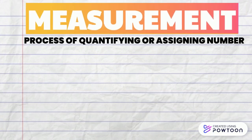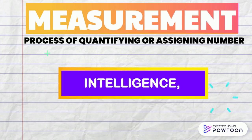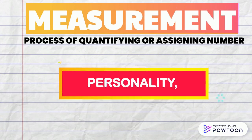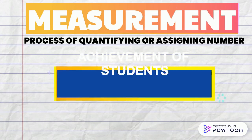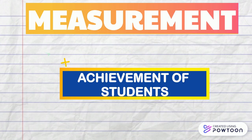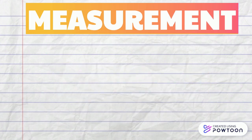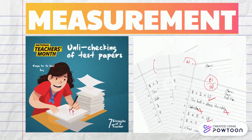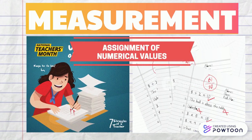Measurement is the process of quantifying or assigning numbers to an individual's intelligence, personality, attitudes and values, and achievement of students. It is an act or process that involves the assignment of numerical values to whatever is being tested.